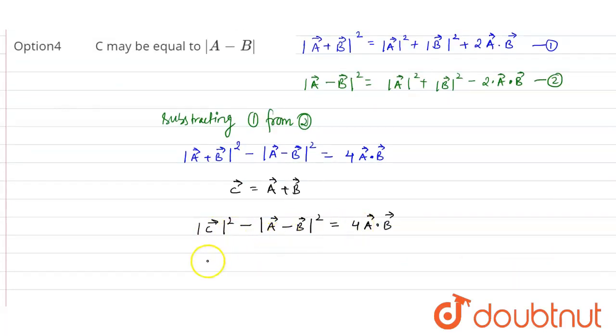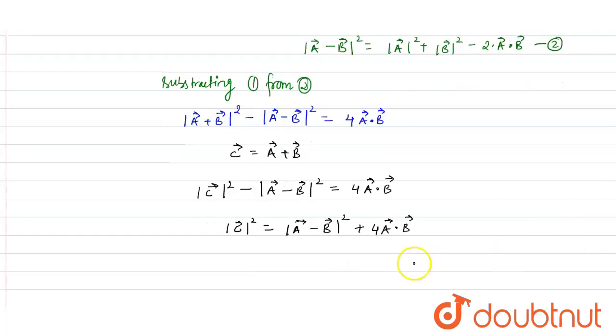Now, removing this dot product what we get is mod of C vector whole square is equal to mod of A vector minus B vector whole square plus 4 times A vector dot B vector. It will be mod of A vector into mod of B vector into cos theta. That theta is the angle between A and B which is given as 120 degrees.